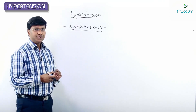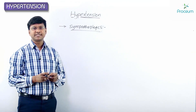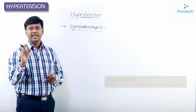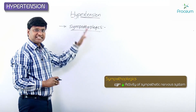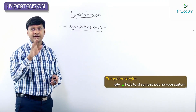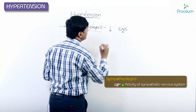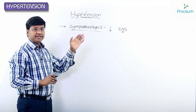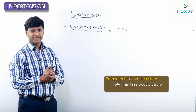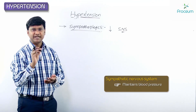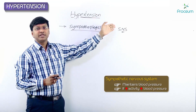Sympathoplegics are drugs aimed at decreasing the activity of the sympathetic nervous system. As discussed in the introduction, the sympathetic nervous system plays a major role in hypertension and in the maintenance of blood pressure. If sympathetic nervous system activity increases, the blood pressure of the individual increases.